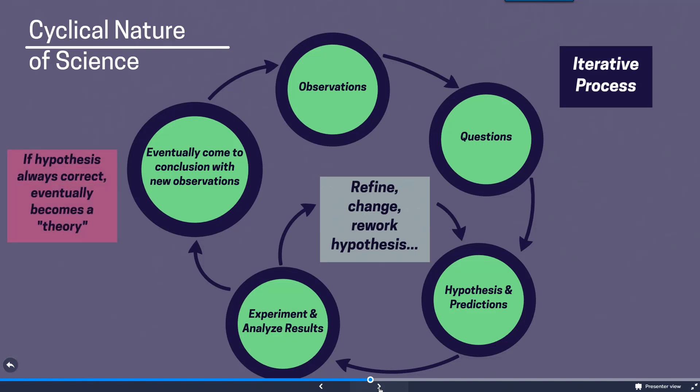So if a hypothesis is always correct, eventually it's going to become a theory. But obviously with all of this reworking and changing that's very difficult to achieve. So there are very few theories out there.